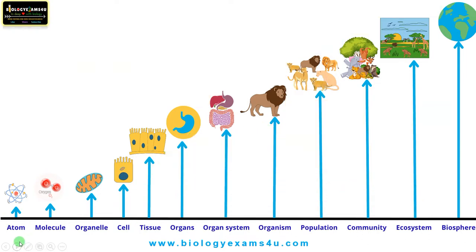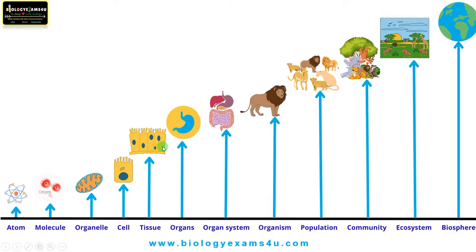Let me summarize. Atom is the basic unit of matter. Atoms combine to form molecules; molecules form macromolecules like carbohydrates, proteins, etc. These, surrounded by a membrane, form organelles — the subcellular structures present within the cell. Then comes the cell, the basic unit of life, the smallest unit with many organelles inside, capable of growth, reproduction, etc. Cells of the same type performing the same function form tissues.